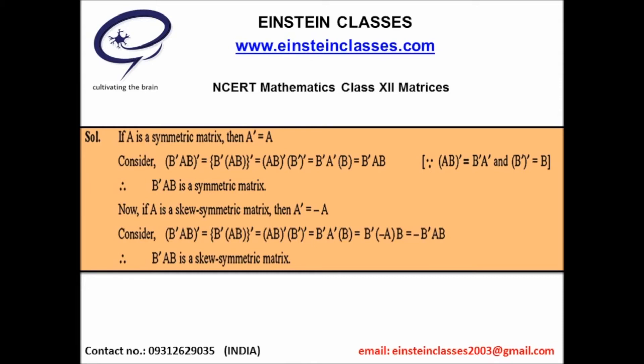Now apply the same procedure for part two: we have to prove B'AB is a skew-symmetric matrix under the condition that A' = −A, meaning matrix A is a skew-symmetric matrix.